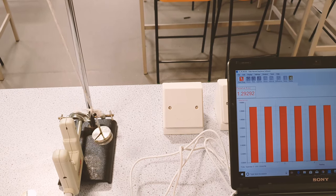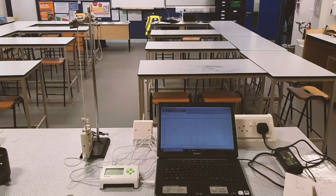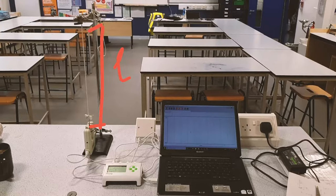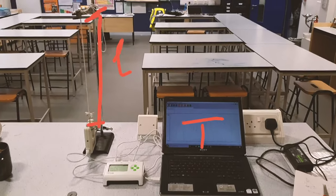So after establishing that the time period of the pendulum does not depend on the mass, or indeed the amplitude, then we can vary the length. That's going to be the typical practical that we do with pendulums. We vary the length, and we see how that affects the time period.